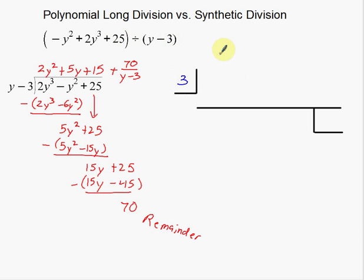Actually, you know what? I'm going to rewrite this so we can see this a little bit better: 2y³ - y² + 0y. There's my gap. I don't have a y in here. Plus 25. Don't forget that gap.